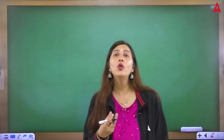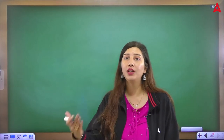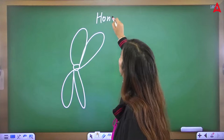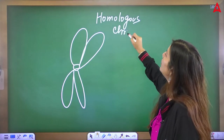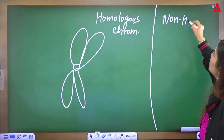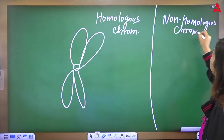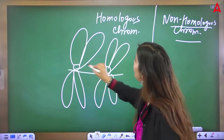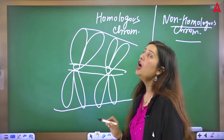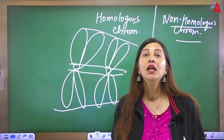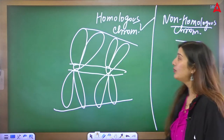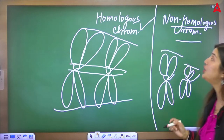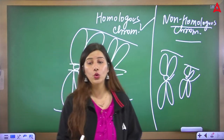Chromosomes can also be of two types: homologous and non-homologous. Homologous chromosomes have the same chromatid length, centromere at the same position, and contain the same type of genes and their alleles. Non-homologous chromosomes differ in chromatid length, centromere position, and gene content.